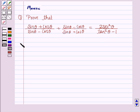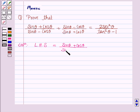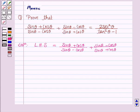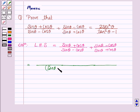Let's now move on to the solution. Let us first simplify the LHS, which is (sin θ + cos θ)/(sin θ - cos θ) + (sin θ - cos θ)/(sin θ + cos θ). To simplify this, we will take the LCM, which is (sin θ - cos θ)(sin θ + cos θ).